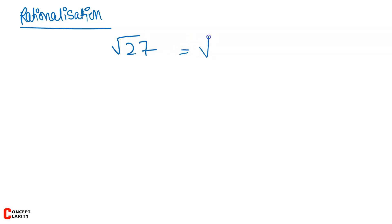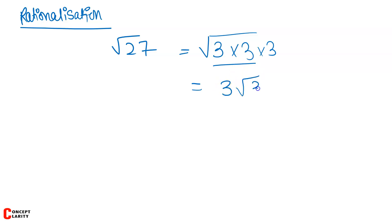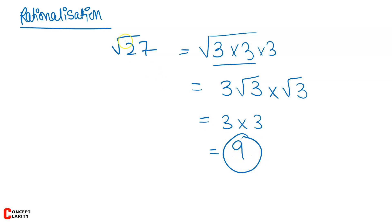Next, different types of questions come on rationalization. Rationalization is a very important topic — for sure a 3-mark question comes from it, so we will focus more on rationalization in this video, and it will come to you very easily, I promise. So, let's say we need to rationalize the number √27. Root 27 can be written as 3 × 3 × 3. Taking the square root, we take 2 as common, so it becomes 3√3.